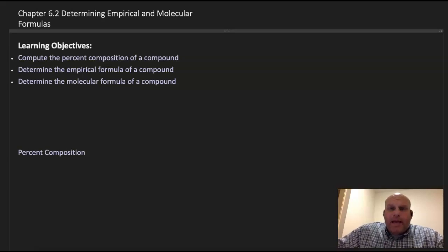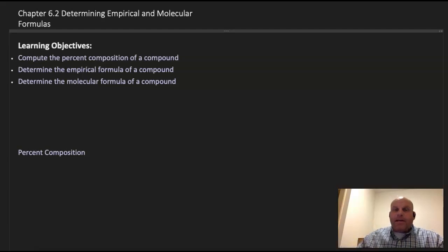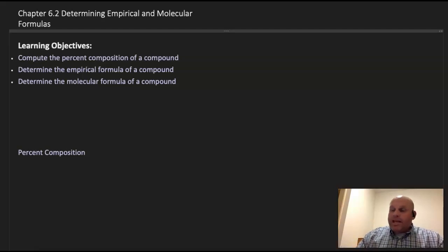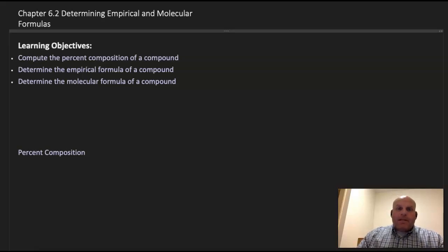Hello, Professor Simms. I'm back again for Chapter 6, Section 2: Determining Empirical and Molecular Formulas. Once again, here are your learning objectives. Basically, three types of calculations we need to walk through here in this section: percentage composition, then empirical formula, and finally molecular formula.